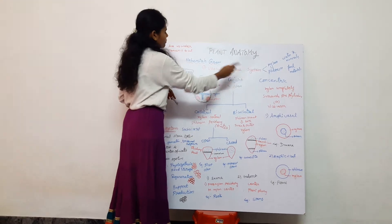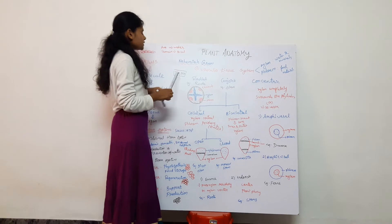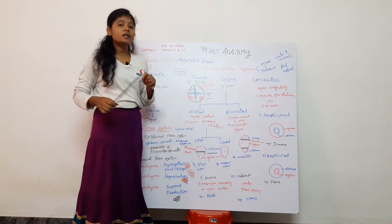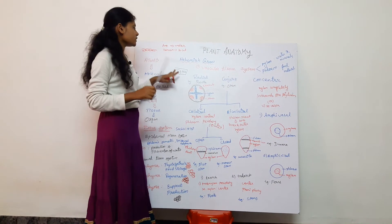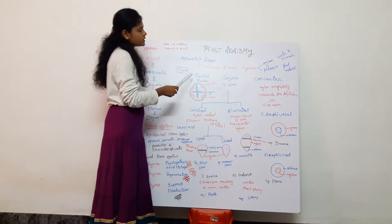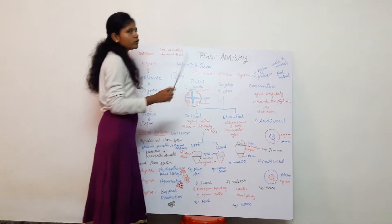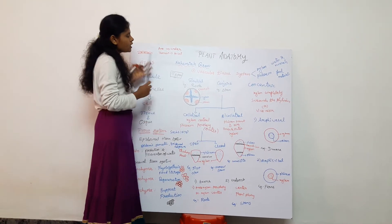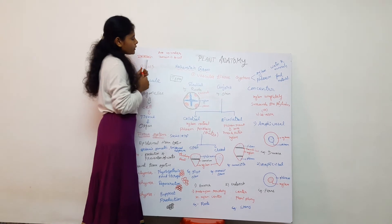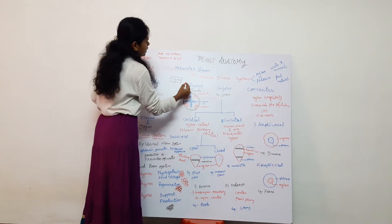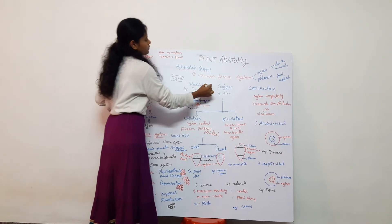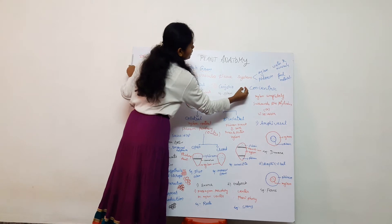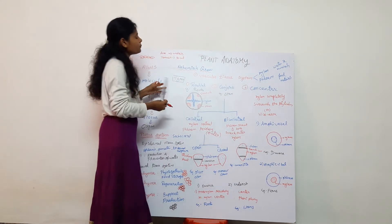So this is very important. In vascular bundles, there are several types. The major types are classified into three: first, radial vascular bundles; second, conjoint; and third, concentric.